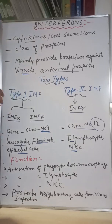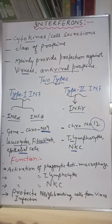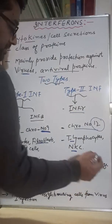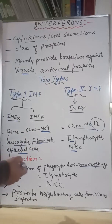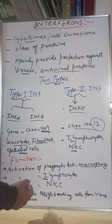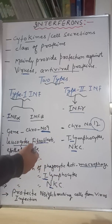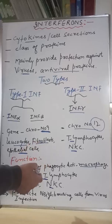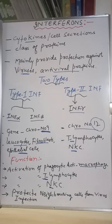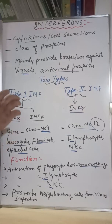Now, what do interferons do? What are their functions? Number one — listen carefully — activation of phagocytic activity. Interferons activate phagocytes like the macrophage, the cell with the highest power of phagocytosis. They also activate T lymphocytes, which are important immune cells, and they activate natural killer cells (NKCs).